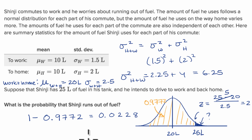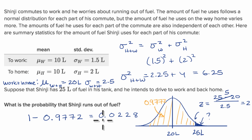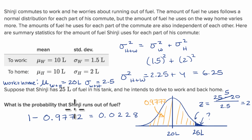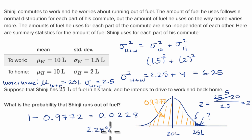That equals 0.0228. So 0.0228 is the probability that Shinji runs out of fuel. If you want to think of it as a percent, there is a 2.28% chance that he runs out of fuel.